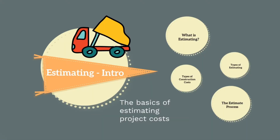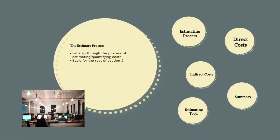Now we have a better understanding of what estimating is, the types of estimating and the types of costs we're required to estimate, let's revisit the estimating process in more detail. In this section we'll go through the estimating process, how to estimate direct and indirect costs, and summarizing the estimate. Finally we'll look at the different software estimating tools to do this.